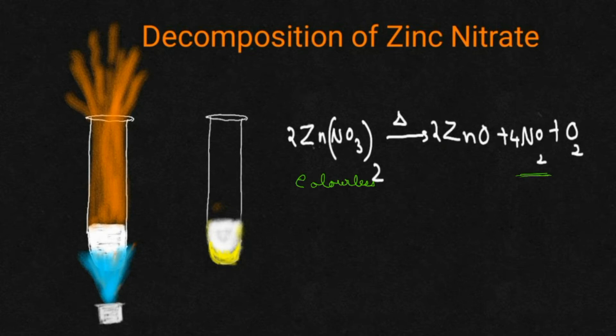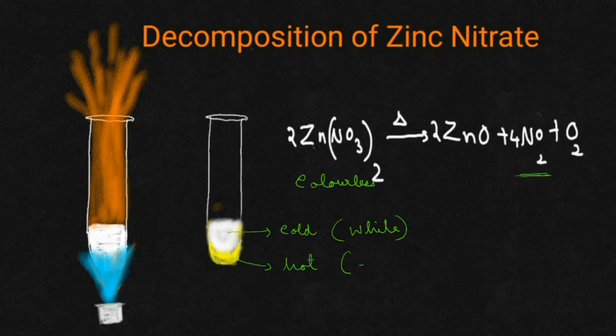Along with that you will be getting a residue at the bottom of the test tube. Something is special with zinc oxide — you should remember that. Once when it is cold, it will be white in color. Once when it is hot, it will be yellow in color. So wherever the test tube is hot, in those portions the color of zinc oxide is yellow.